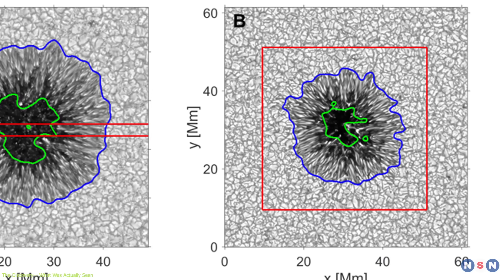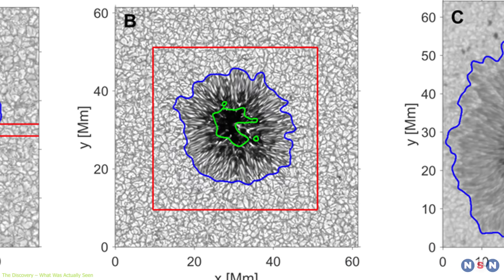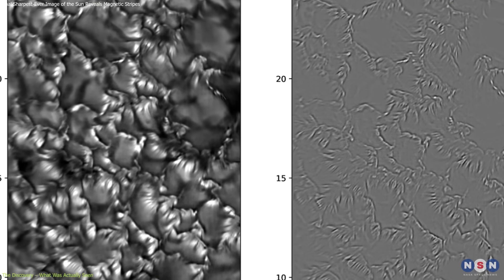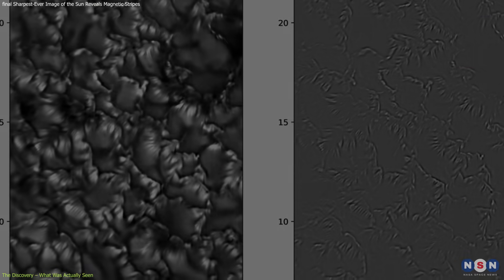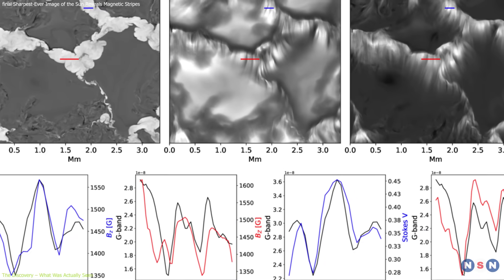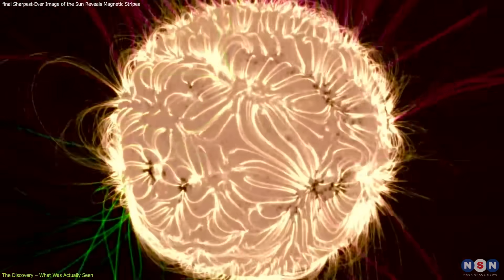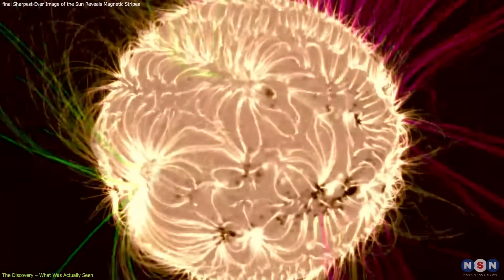Before this, similar features had been theorized in simulations, but had never been observed directly. What's important is not just the appearance of the striations, but that they signal the presence of fine-scale magnetic fields interacting with the Sun's convective surface in ways we couldn't resolve until now.